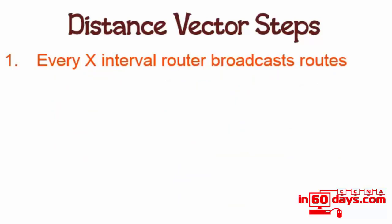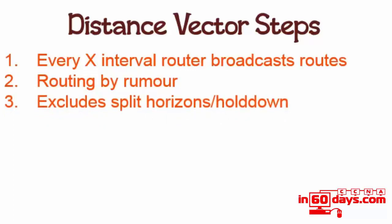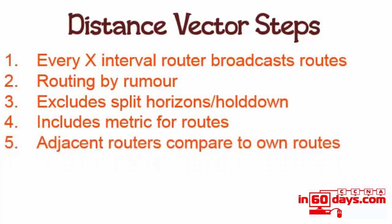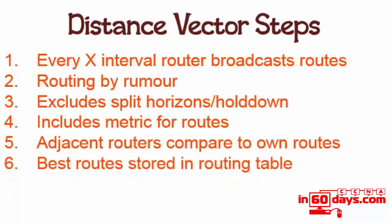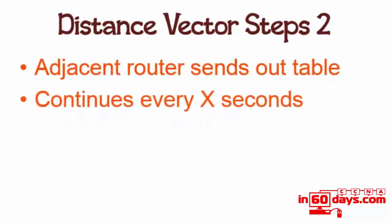For every x seconds - whatever it may be for the protocol or if you've configured it differently - the router broadcasts its entire routing table. These broadcasts are received by other routers and then forwarded on, which is where we get the concept of 'routing by rumor.' It does exclude issues including split horizon, and routes that are in hold-down state. It does include the metrics for routes. Adjacent routers compare the routes received to the routes installed in the routing table and the topology table if it has one. Best routes are stored in the routing table. Two examples of distance vector are RIP and IGRP.